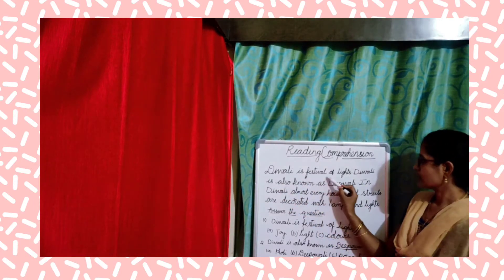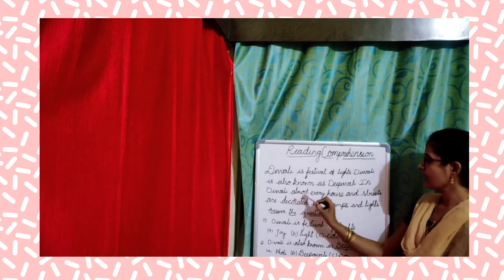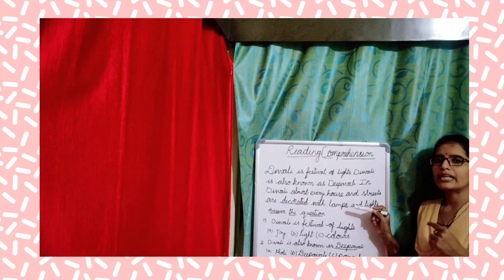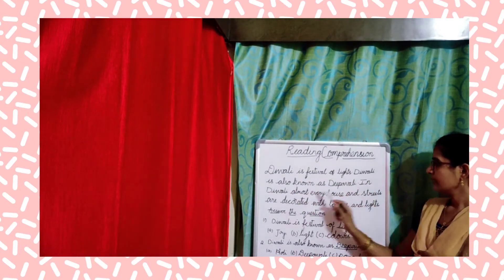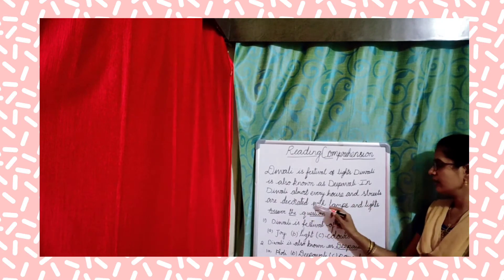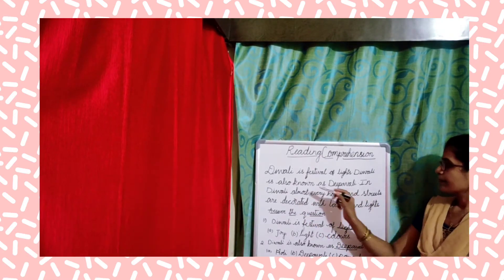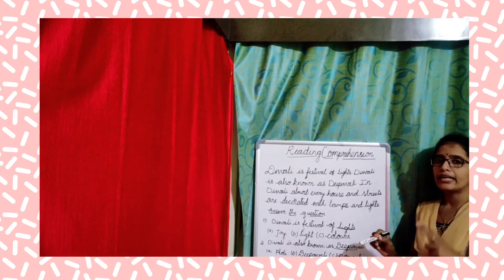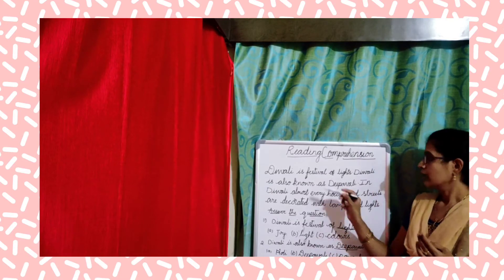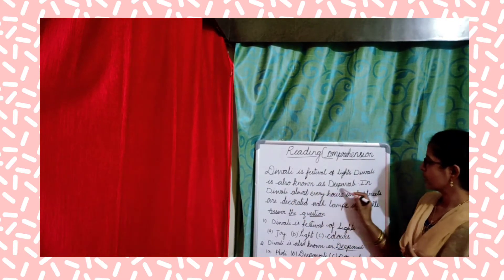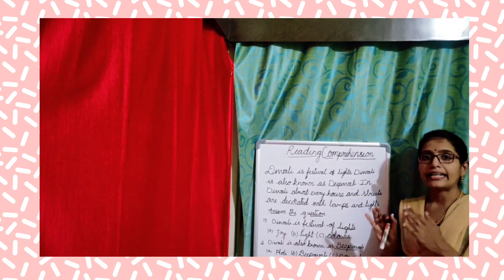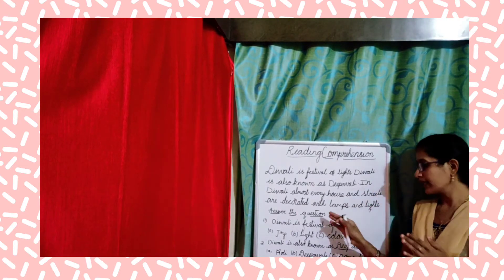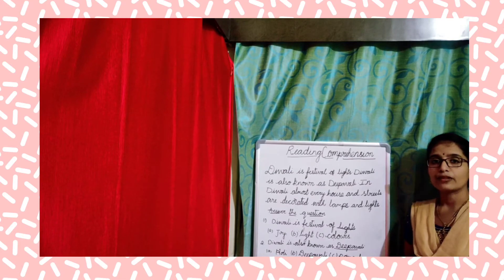For example, the passage is: 'Diwali is festival of lights. Diwali is also known as the Pavali. In Diwali, almost every house and streets are decorated with lamps and lights.' You read it first fast, then a little slower, then once more slowly. By reading it 2 to 3 times, you will get a clear idea of that particular passage and you can easily answer the given questions.